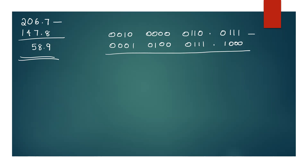Now we start with subtraction rules. 1 minus 0 is 1. 1 minus 0 is 1. 1 minus 0 is 1. When we get 0 minus 1, we need to borrow. It's not available here, so we borrow from the next position.